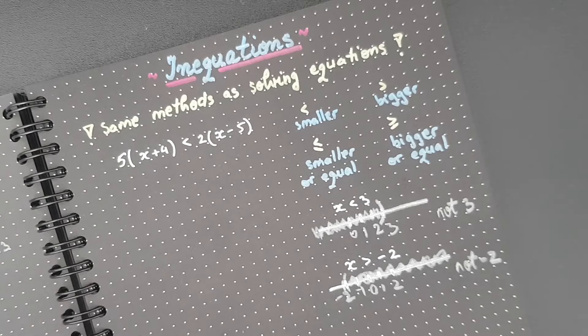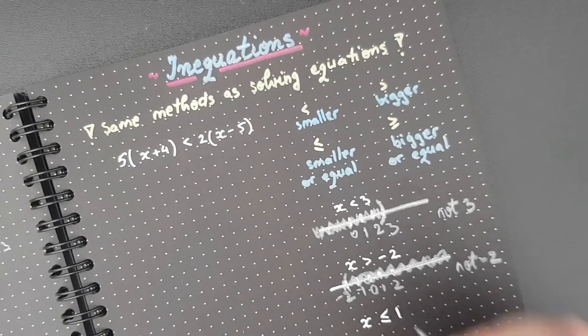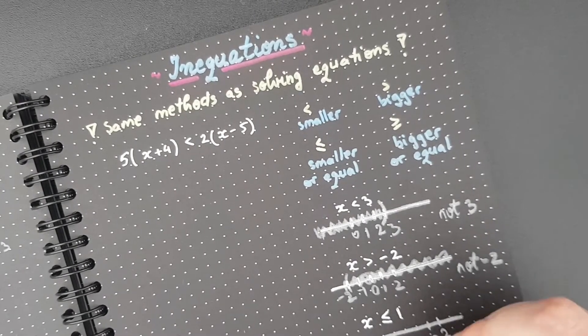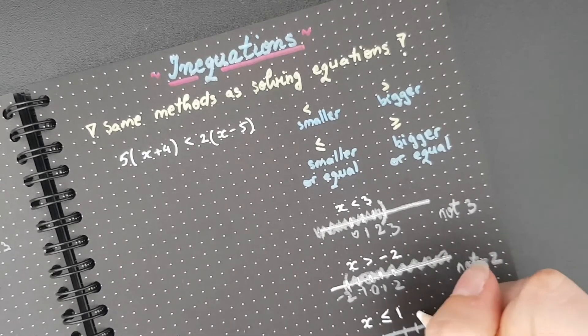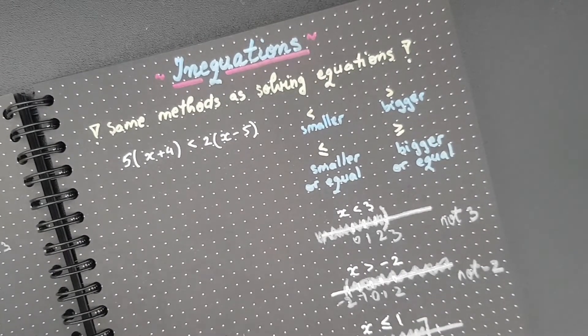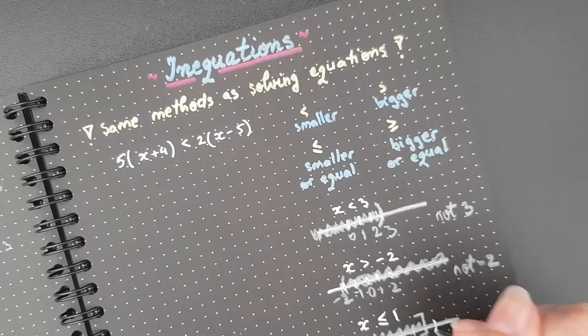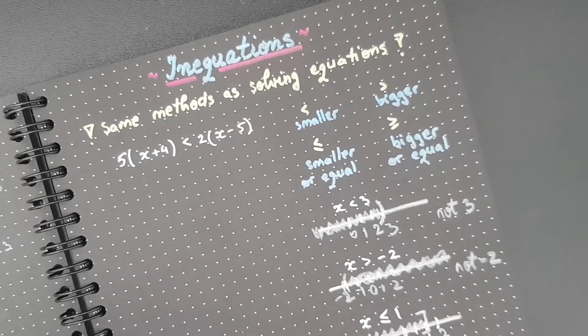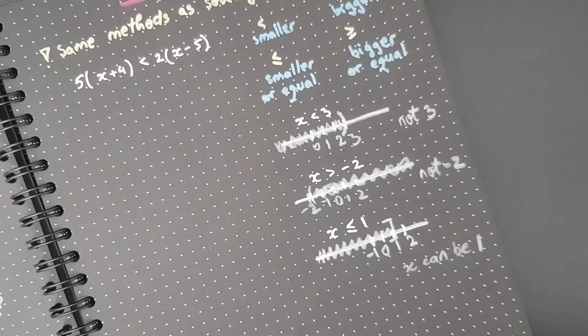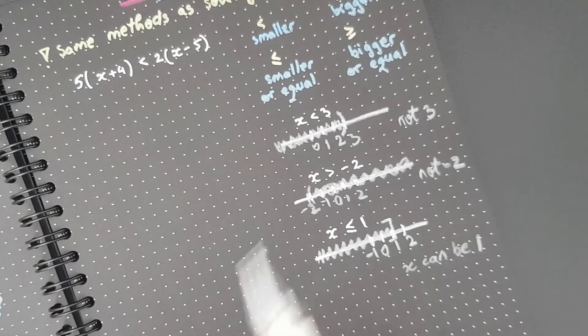While if I have x smaller or equal to 1, so I've got the number line, let's say I've got 2, 1, 0, negative 1, and so on. I actually take the number 1 into consideration and any other number that's smaller than that. So number 1 is included. It's not the same as the other ones. Number 1 is included this time. And I think it's very important to understand that. So x can be 1. And it's really important for everyone to understand that when it comes to any inequalities.